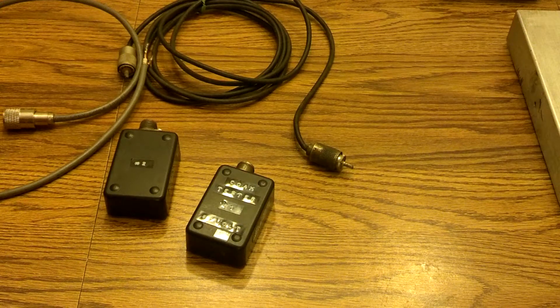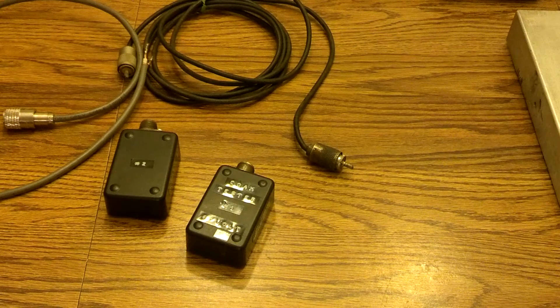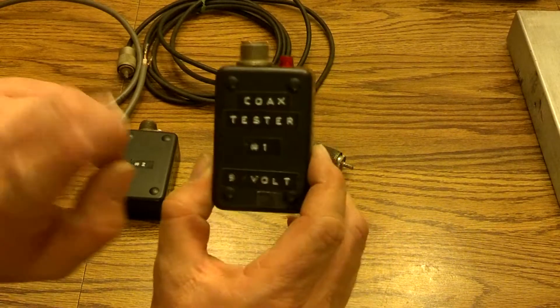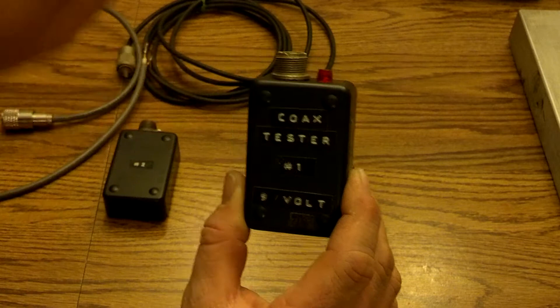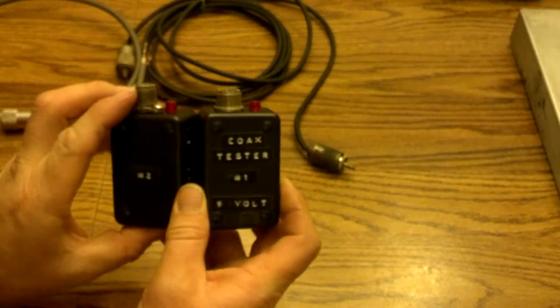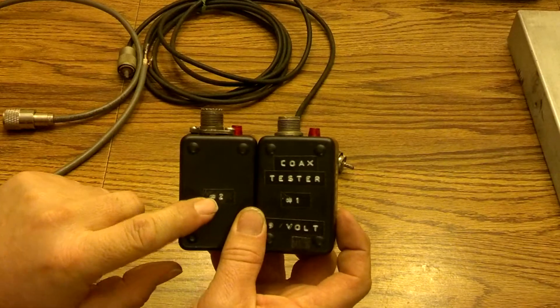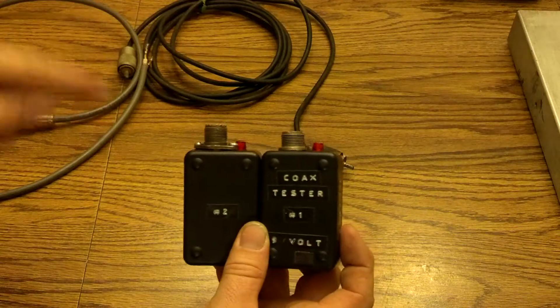Okay, there's something I put together for checking coax cables. It's got a 9-volt battery in there, LED light, everything will make a complete loop. And this one right here, there's no battery in this one. This one runs off of this one when it makes a complete loop.